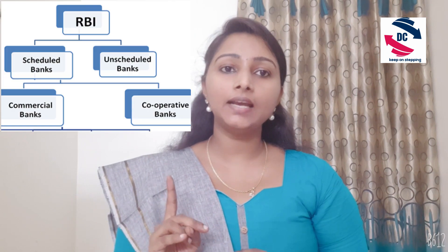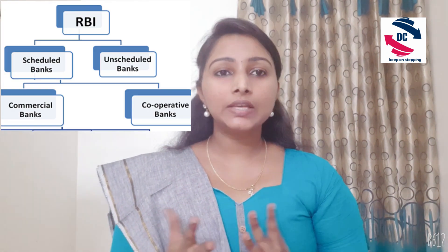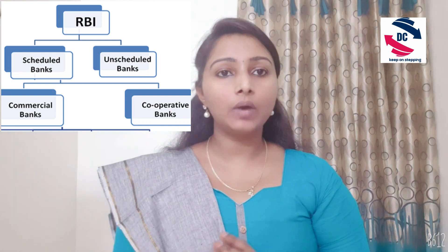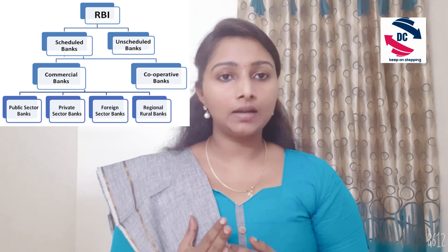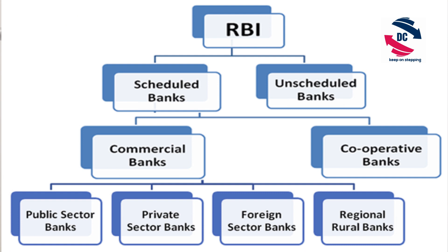The scheduled bank is again classified into two: one is commercial bank and another one is cooperative bank. The commercial banks include public sector banks like SBI and Oriental Bank of Commerce, private sector banks like ICICI, Axis, and HDFC, and foreign banks like Standard Chartered. Foreign banks should fulfill the norms of RBI as well as their host country.